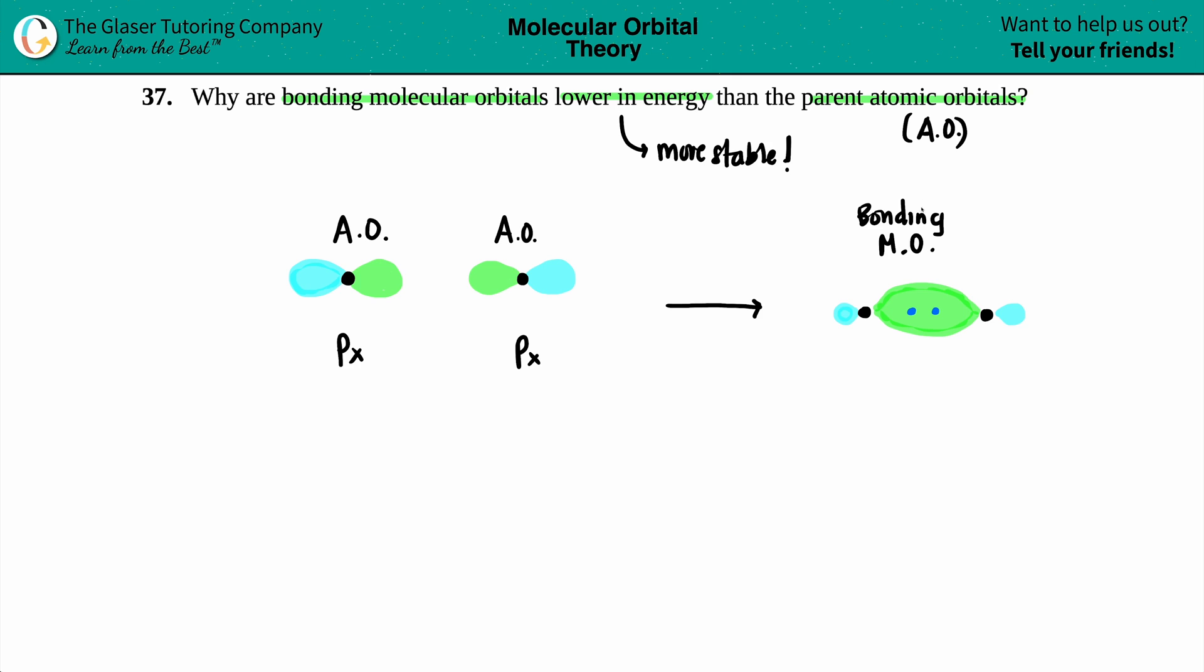And remember, every molecular orbital drawing can only have a max of two electrons. So that means that one electron from this atomic orbital, maybe in the green, came together with the one electron on this atomic orbital to make this.